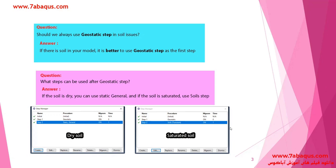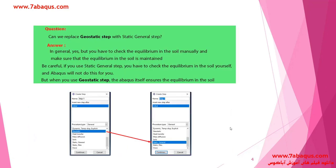The next question is: what steps may be used following the geostatic step? If the soil is dry, you can use a static general step after the geostatic step. If the soil is saturated, you can use a soils step following the geostatic step.